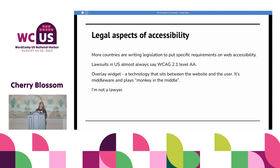A quick note about legal aspects of accessibility. More and more countries are putting into legislation specific requirements on web accessibility. Some requirements will go into effect in the EU in June of 2025. The US is pushing more and more accessibility requirements through both the federal system and individual states. When there have been lawsuits in the US, on almost every single circumstance they have been ordered to meet WCAG 2.1 Level AA.